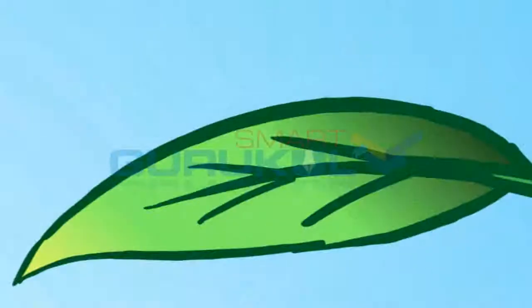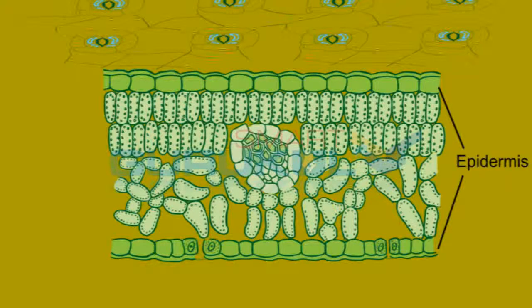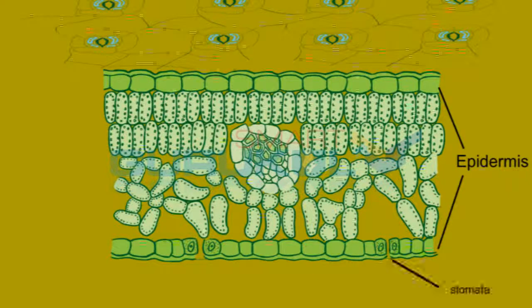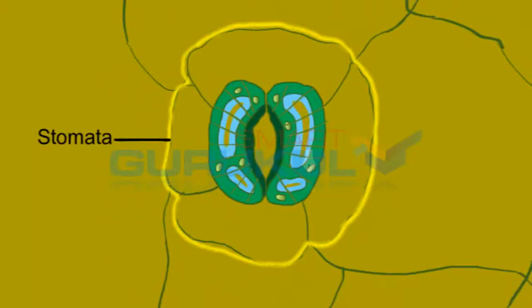The transverse section of a leaf shows that it is covered by epidermis on both surfaces. At some places, epidermis is interrupted by a large number of openings called stomata. The central opening is called stoma. Each stoma is surrounded by two kidney-shaped cells called guard cells. These stomata regulate the exchange of gases from the leaves.